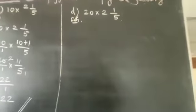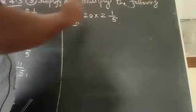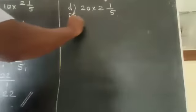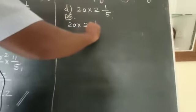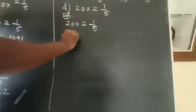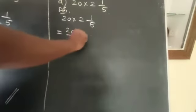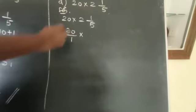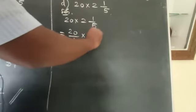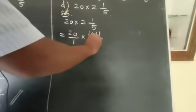Question D: 20 × 2 1/5. Write 20 as a fraction with denominator 1. Convert to improper fraction: 2 × 5 = 10, 10 + 1 = 11 over 5. So 20/1 × 11/5.